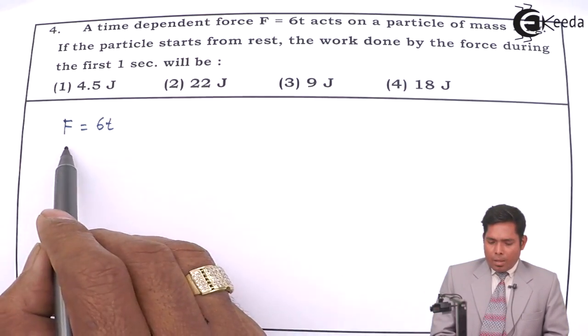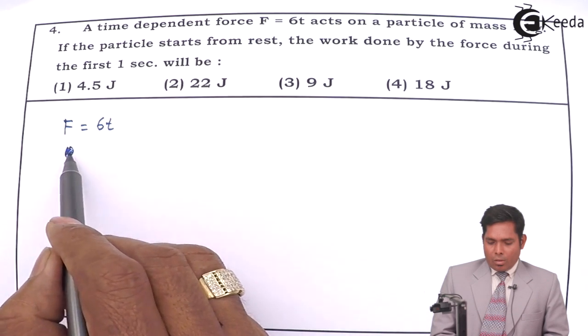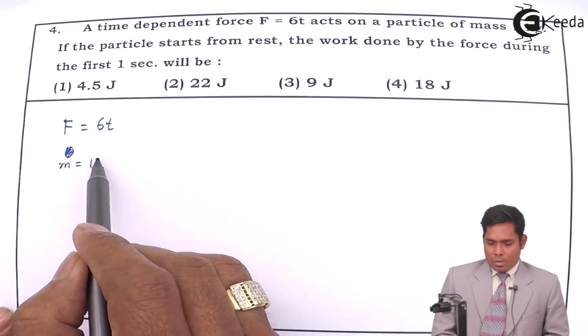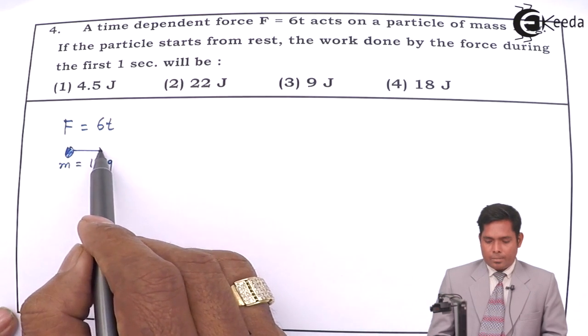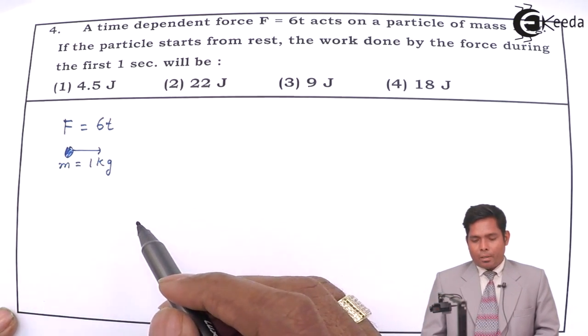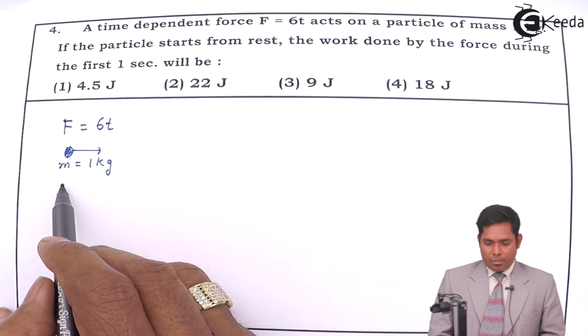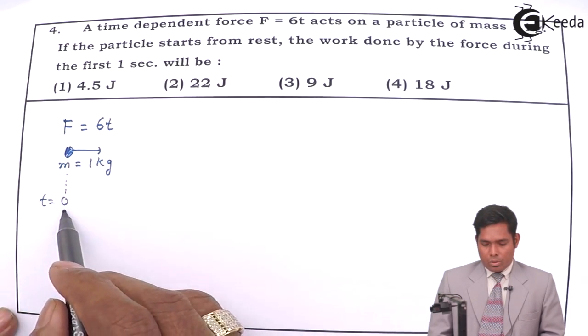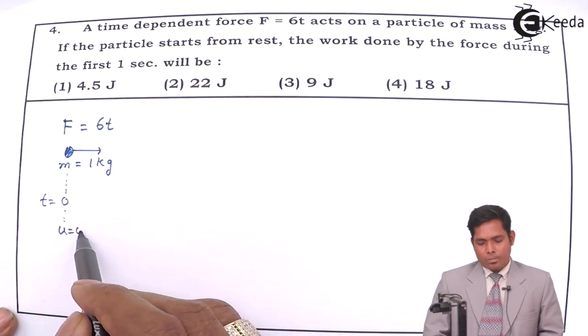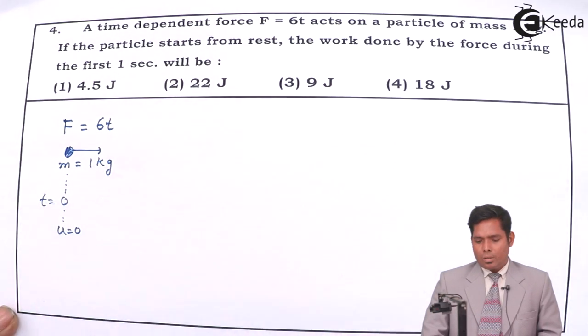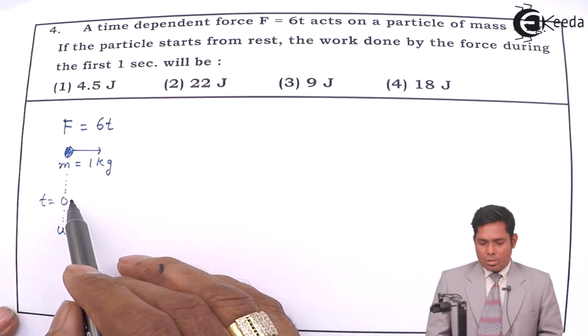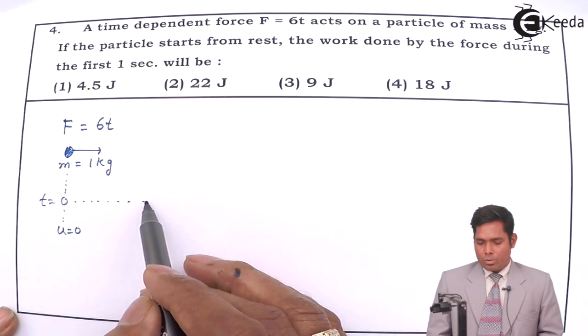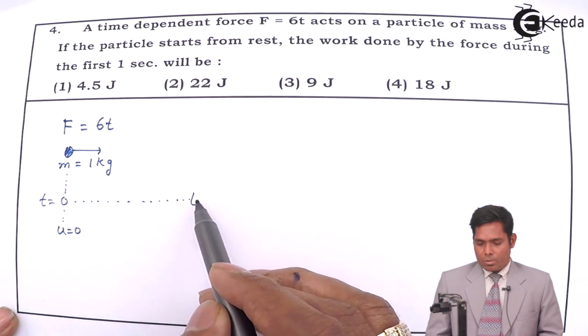Acts on a particle of mass, say one kilogram. So force is acting. If the particle starts from rest, so from rest time t equals zero, the particle is at rest. Its initial velocity is zero. The work done by the force during the first one second, first one second, that means you have to spend only one second.